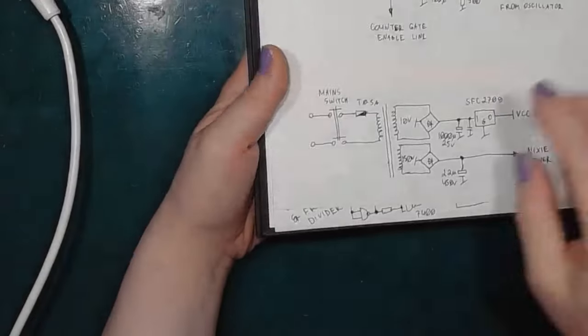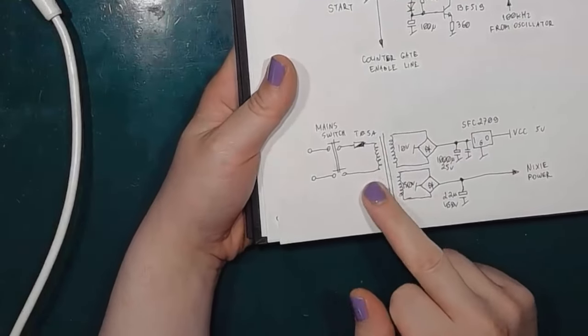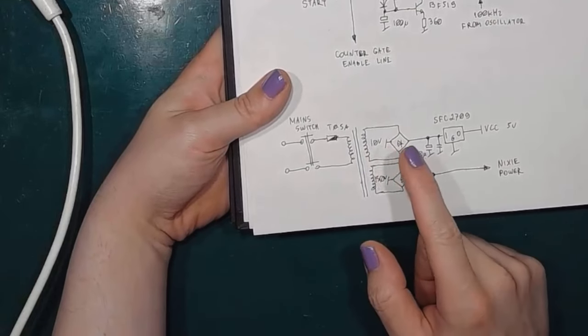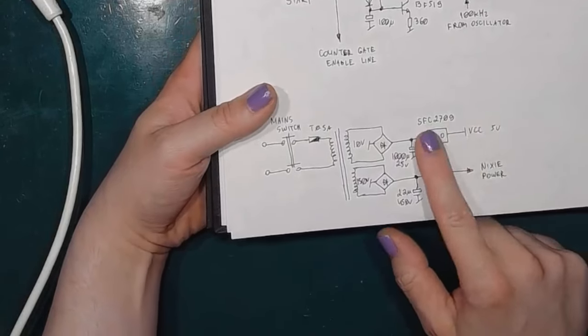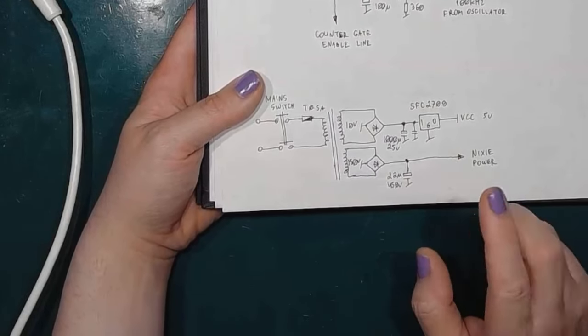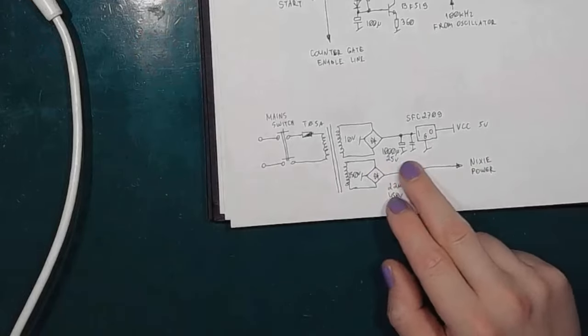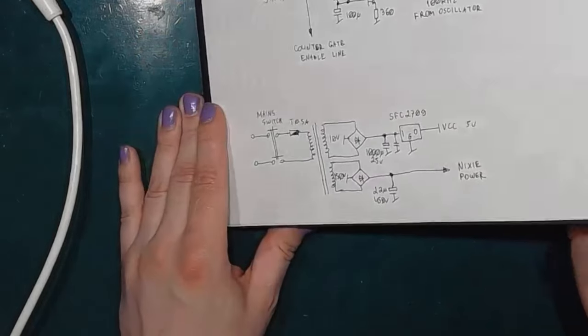And of course the power supply is pretty straightforward, because we've got a transformer supply for the low voltage and high voltage. And the logic is powered from a linear regulator, while the Nixie tubes are powered from an unregulated supply.